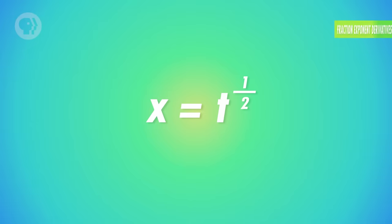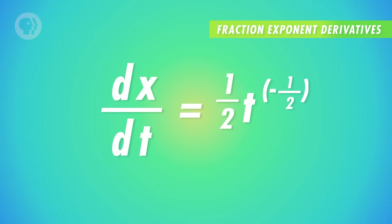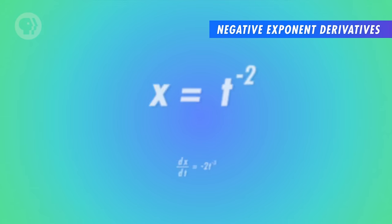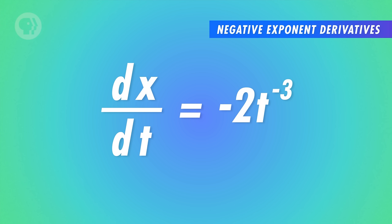The same goes for equations where the exponents are fractions or decimals. So the derivative of t to the power one-half is one-half t to the negative one-half. It works for negative exponents too. The derivative of t to the power minus 2 is just negative 2t to the negative third.